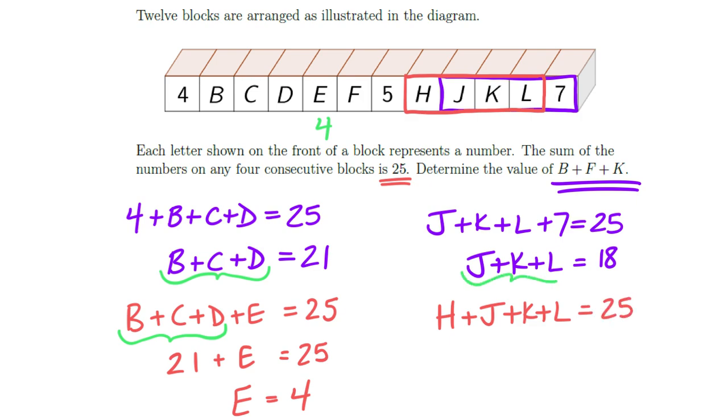And if I look at the four previous squares, so I just move one over to the left, then I also know that H plus J plus K plus L has to give me 25. And I can use that same patterning. J plus K plus L, I can see that expression in the red. And so if I sub that in, then I know that that has to give me 18. And so H has to be 7.